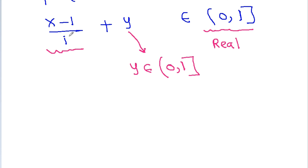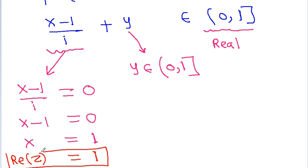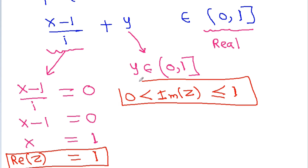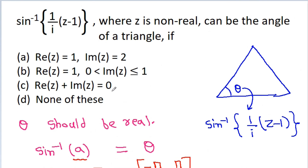Since (x-1)/i is imaginary, (x-1)/i must equal 0, which means x-1 = 0, so x = 1. Here x is real(g) = 1, and y is imaginary(g), which must be greater than 0 and less than or equal to 1. Therefore, the correct option is option B.